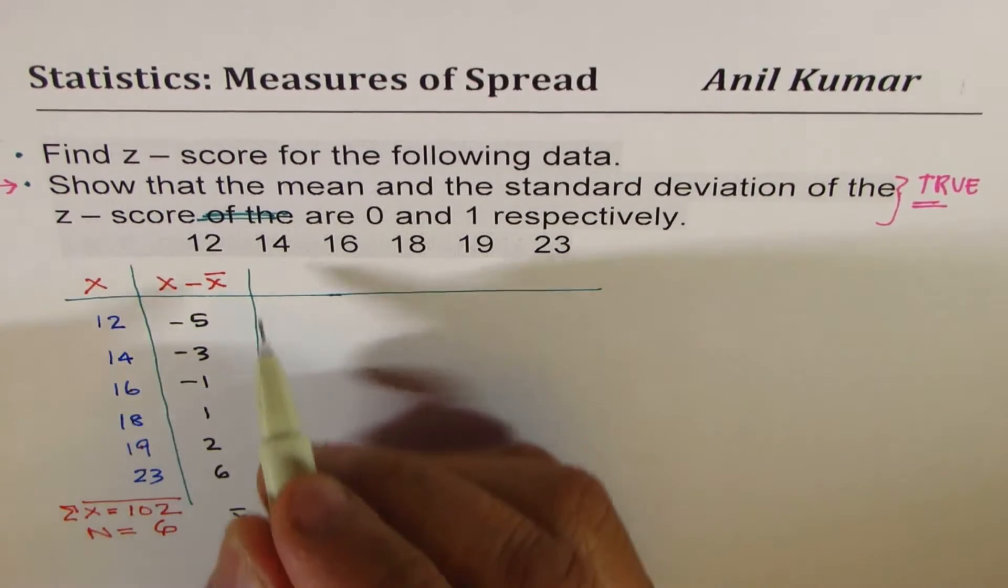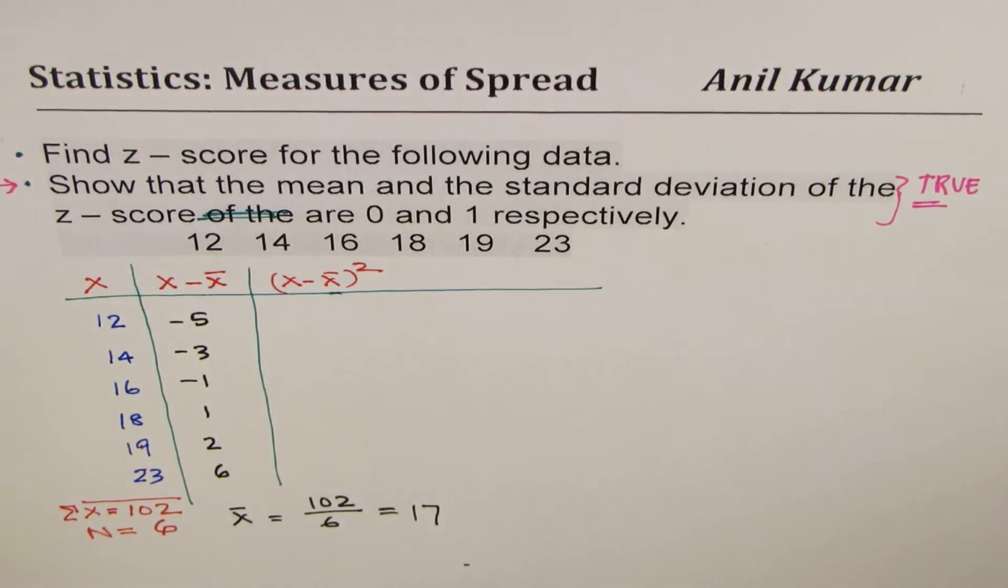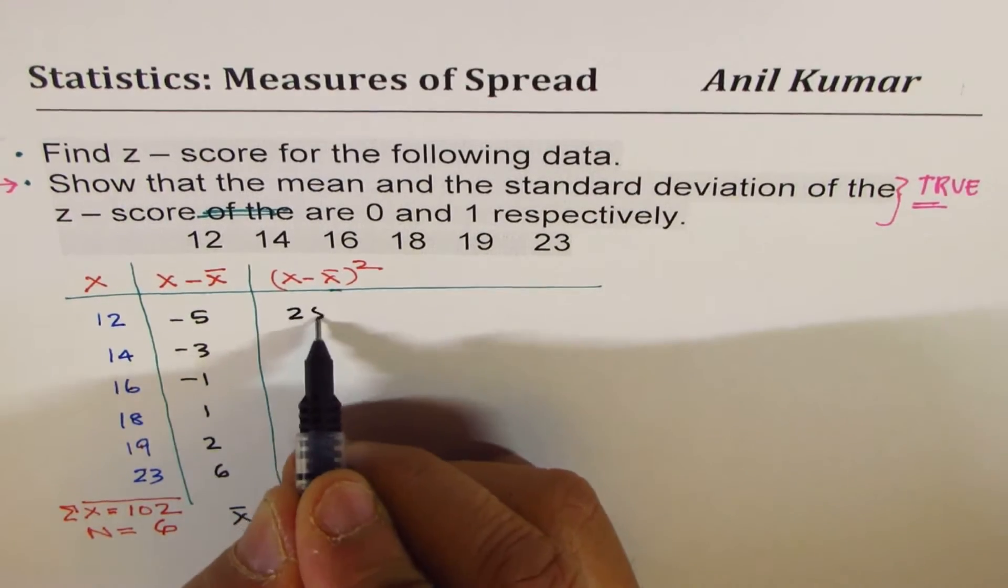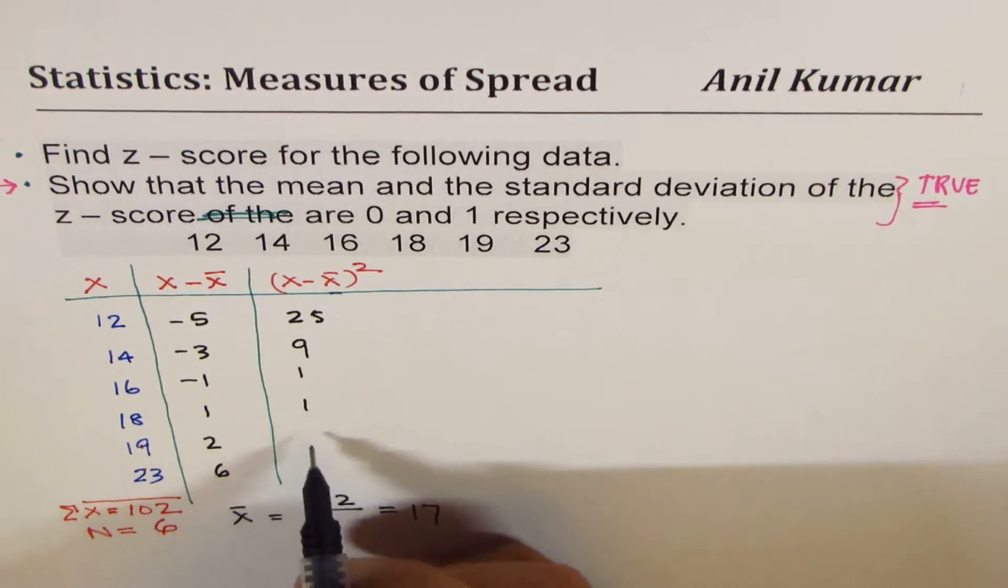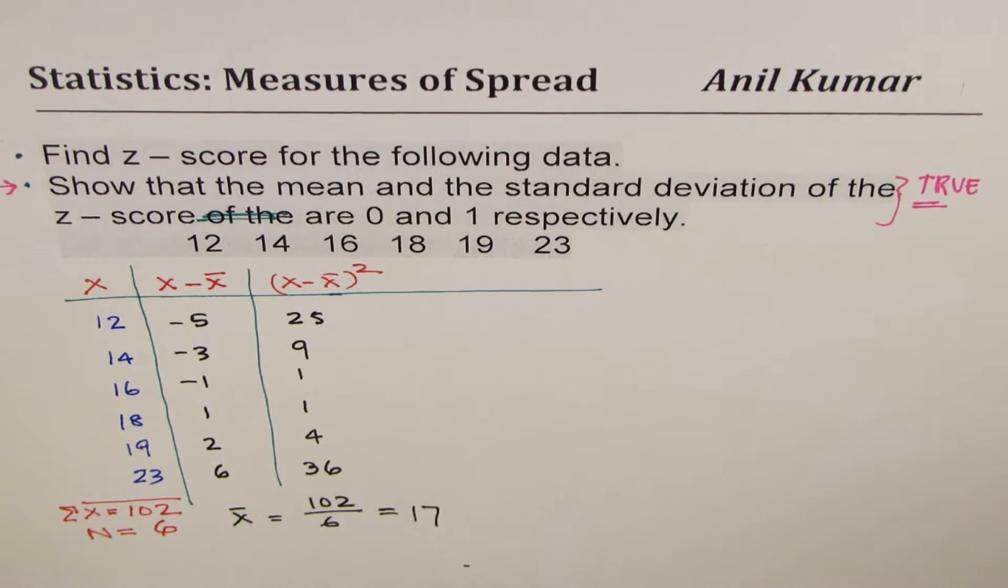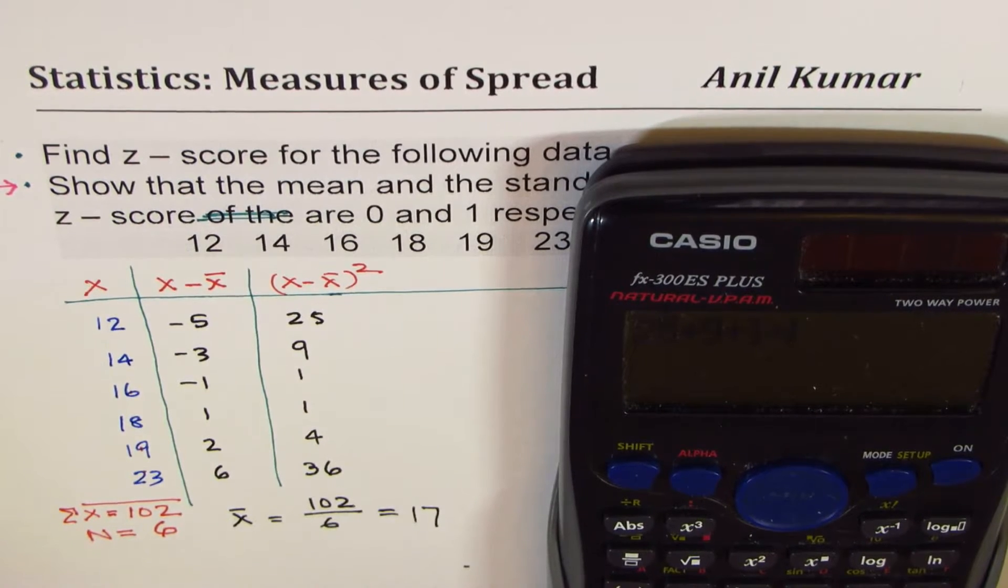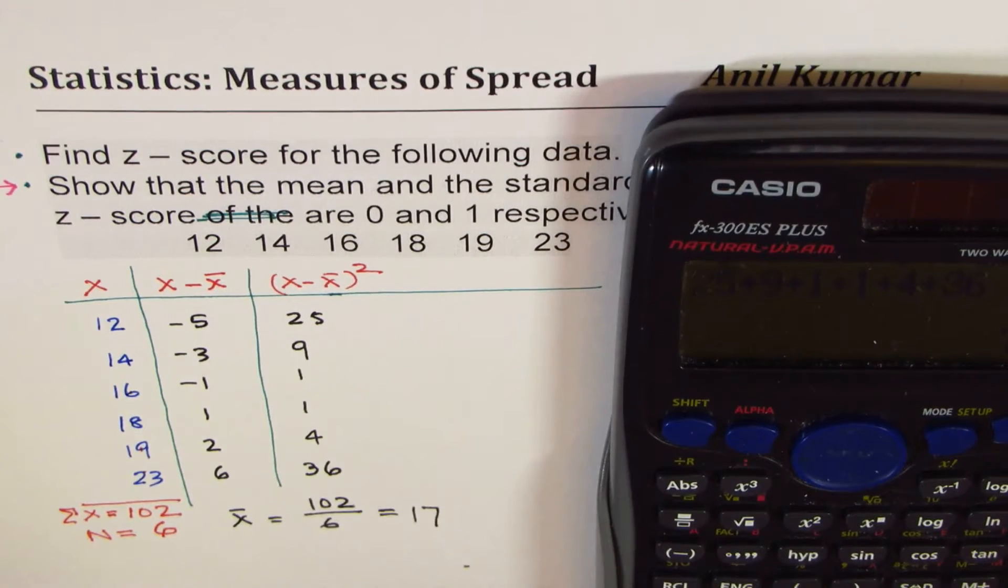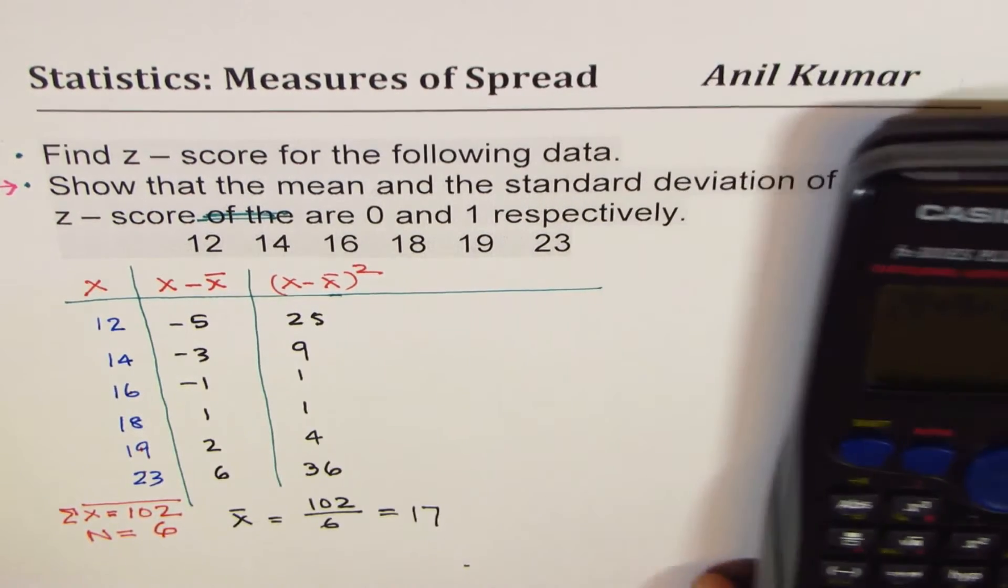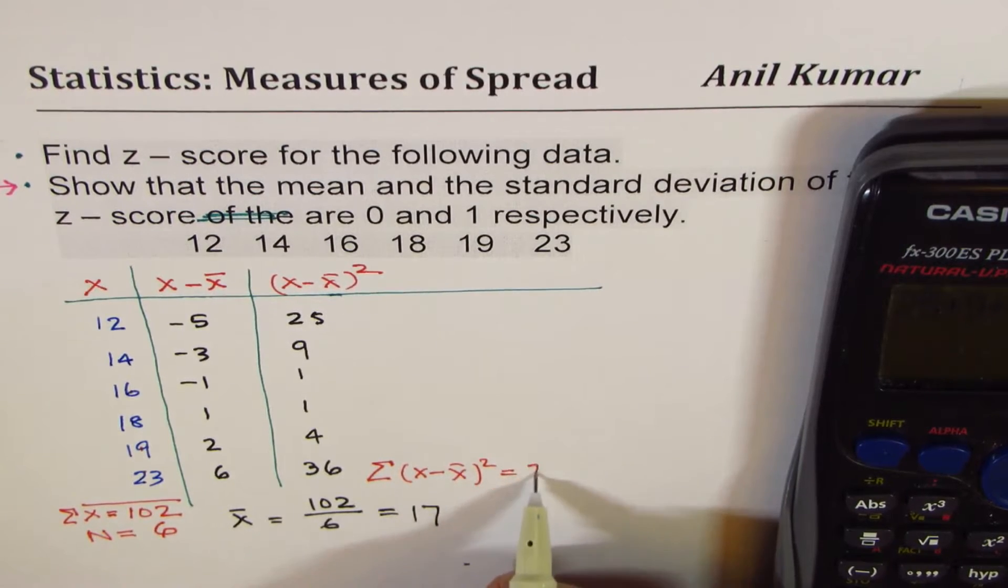And now we have to find square of these. So x minus x̄ whole square. So squares will be all positive: 25, 9, 1, 1, 4, and 36. Let's add them up. So we have 25 plus 9 plus 1 plus 1 plus 4 plus 36 equals to 76. So if we add them up, we get 76.